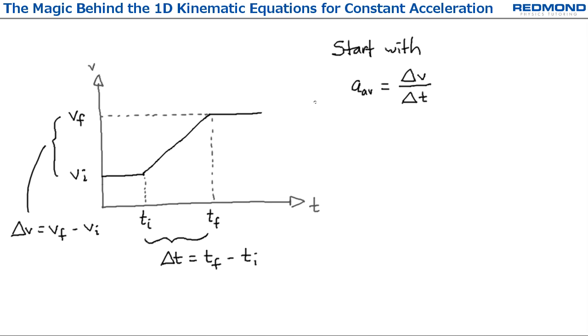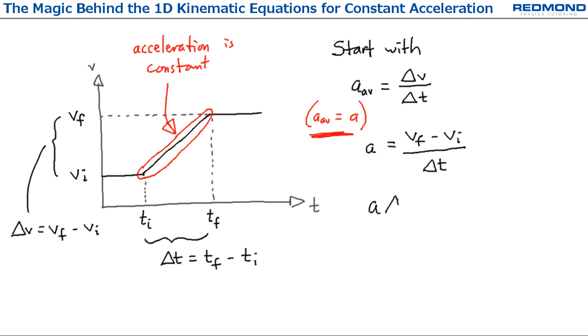Here the acceleration is constant—it has the same slope throughout this phase—so the average acceleration is equal to the constant acceleration. Expanding delta V gives Vf minus Vi over delta T, and then I just rearrange to isolate Vf, getting the first equation: Vf is equal to Vi plus A delta T.